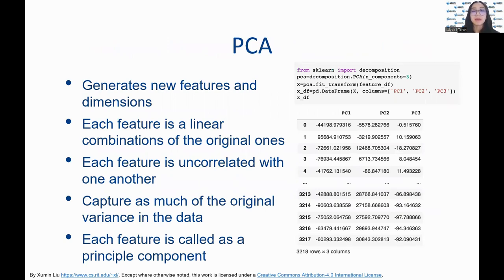In summary, PCA generates new features that are independent from each other, which serves a machine learning algorithm well. The first derived feature captures the most variance from the data, the second one captures the second most, and so on. It can effectively reduce dimensionality, but the new features are not interpretable.